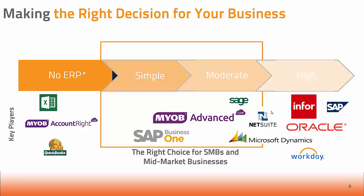People often ask me, Richard, how do I choose? There are so many applications out there. When I was working at Acumatica as Vice President of Partner Strategy and Enablement, before moving back from the United States to Australia and joining Leverage Cloud Technologies, we came up with a way of looking at different solutions that we actually presented to Gartner. They really liked the way we articulated it. It's really about making the right decision for your business.